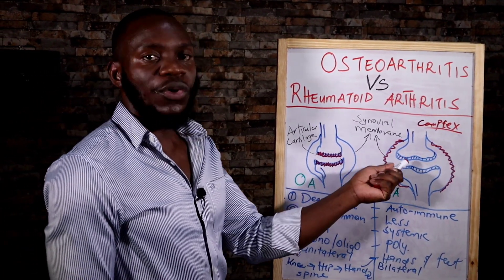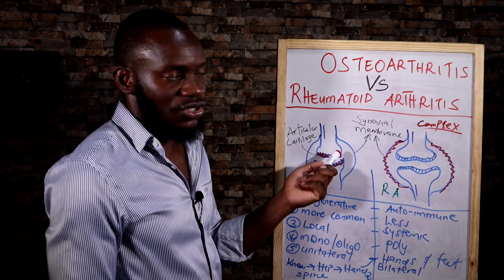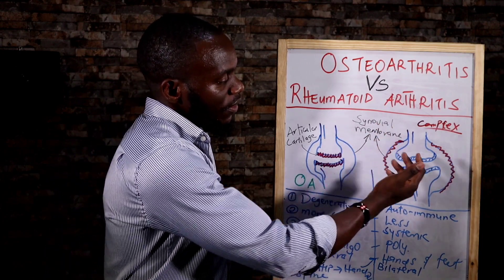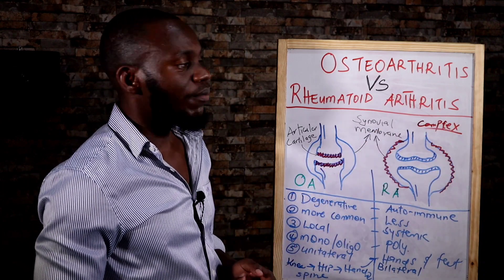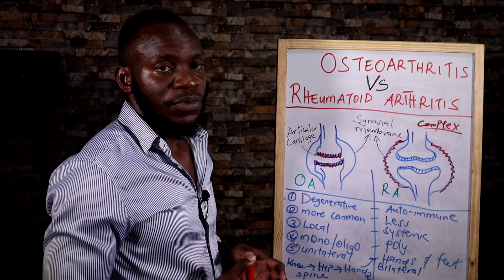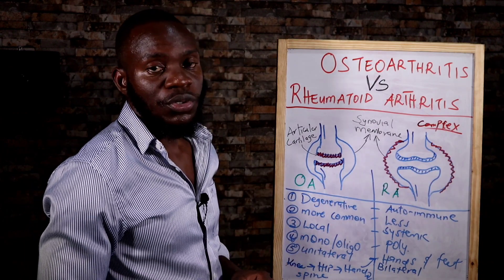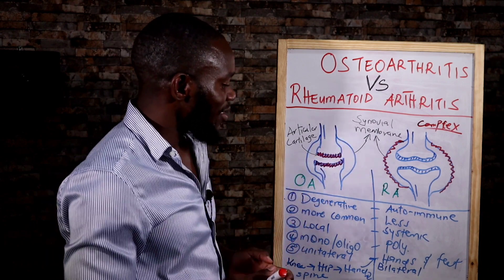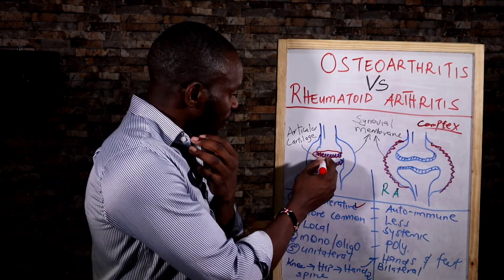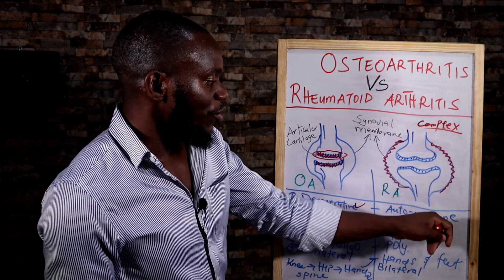Looking at the major differences: number one is the cause. Osteoarthritis is due to trauma, injury, or chemical damage of the articular cartilage. Rheumatoid arthritis is caused by an immune complex that triggers an autoimmune reaction, destroying the synovial membrane. Autoimmune means your cells are targeting your own body tissues. Number two: osteoarthritis is degenerative — meaning destruction of the articular cartilage — while rheumatoid arthritis is autoimmune.